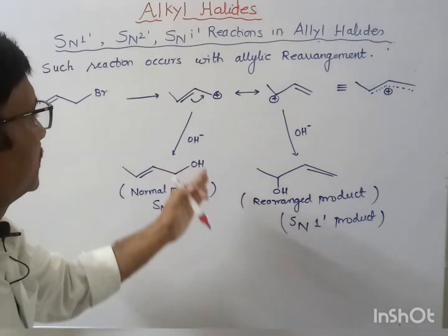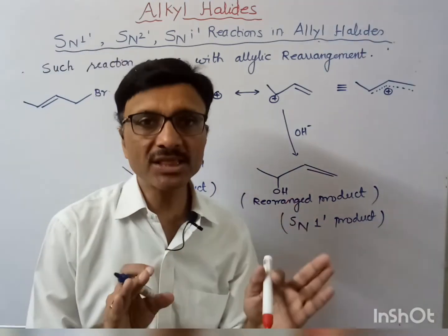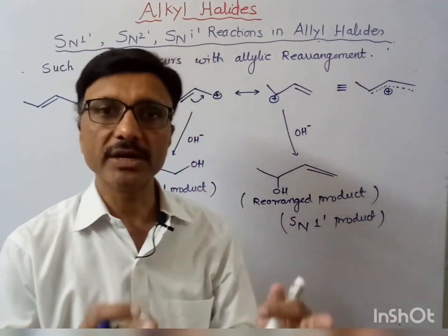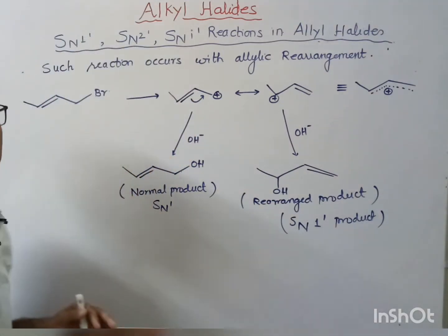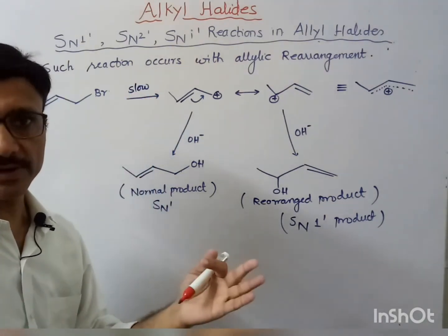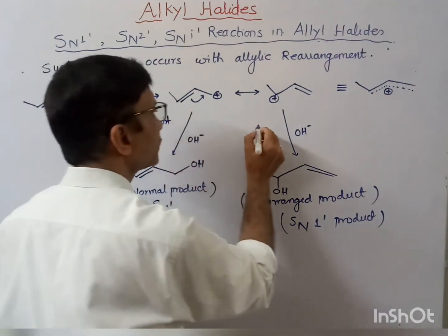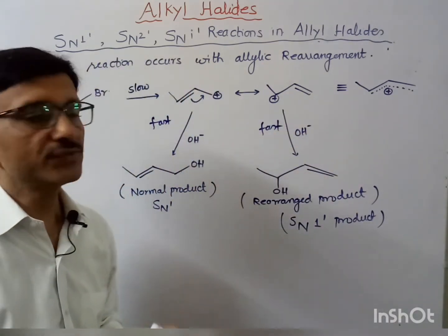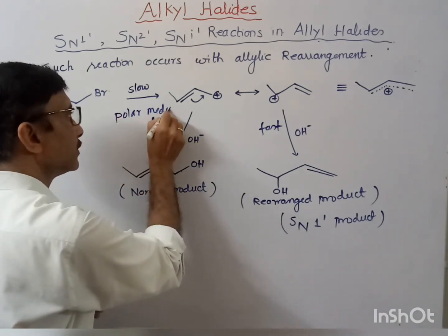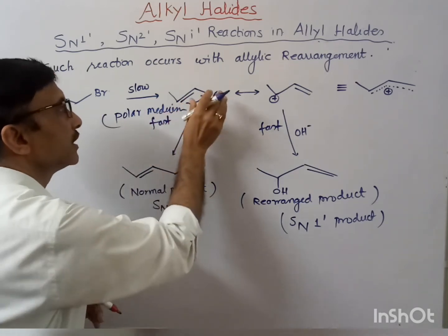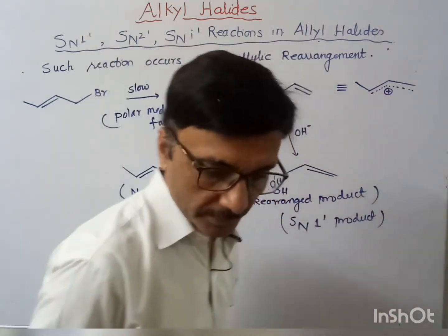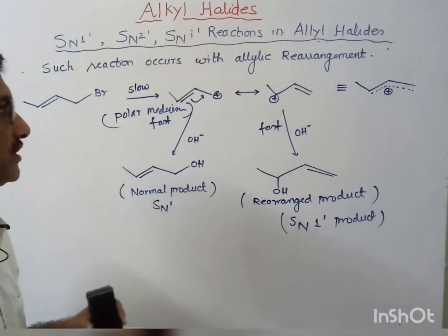The only difference between SN1 and SN1' is that the SN1' reaction occurs in allylic halides via rearrangement. This is a two-step reaction — the first step is slow, similar to the SN1 reaction, and the second step is fast. Such reactions are favored in polar medium because carbocations are easily stabilized in a polar medium.